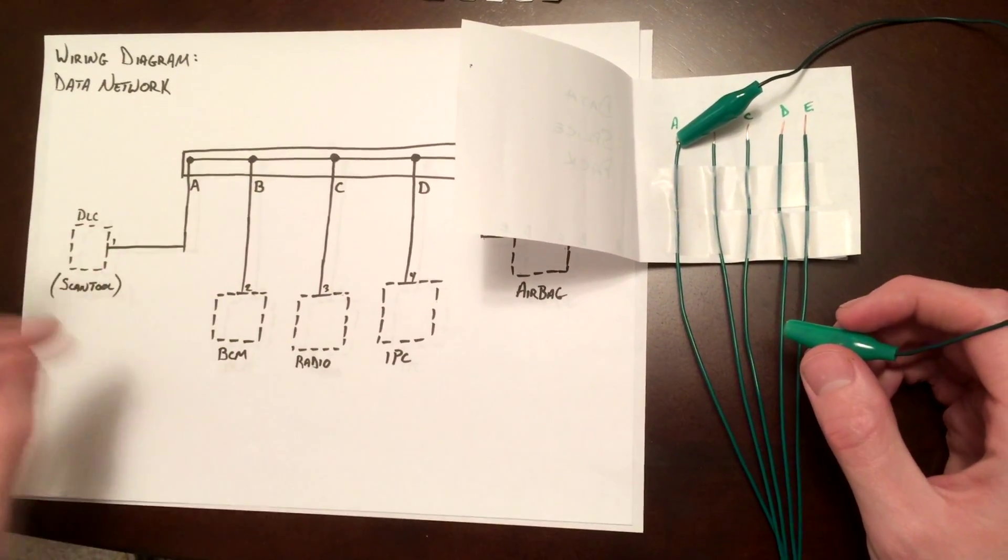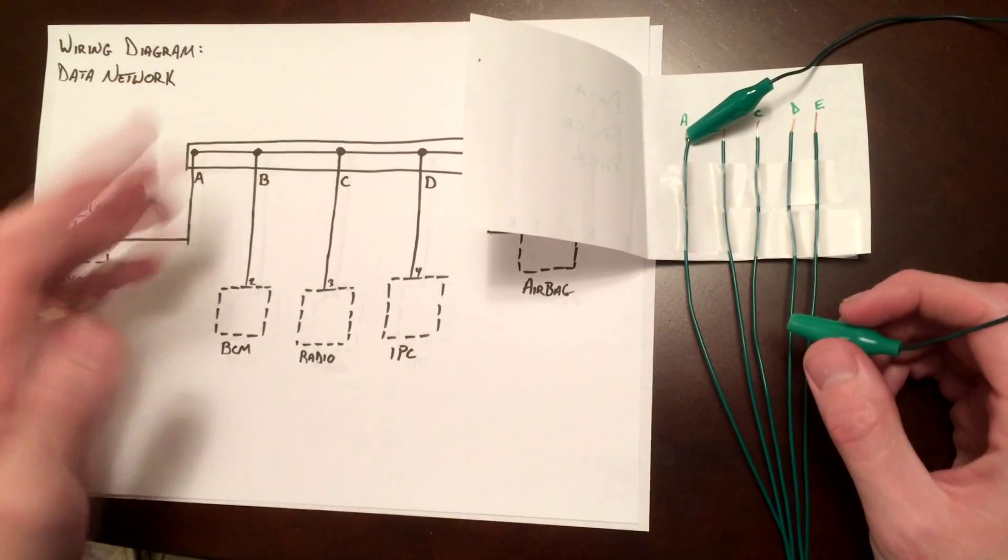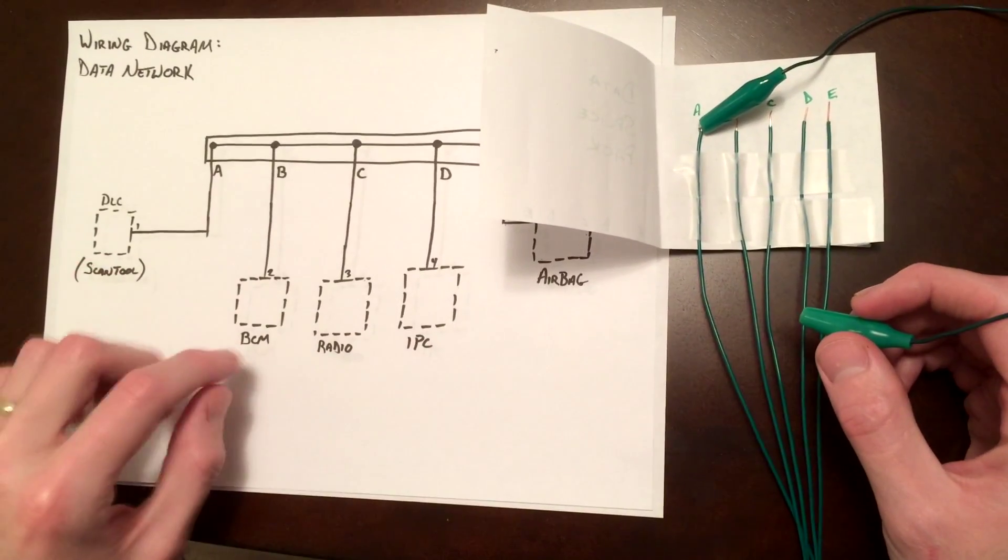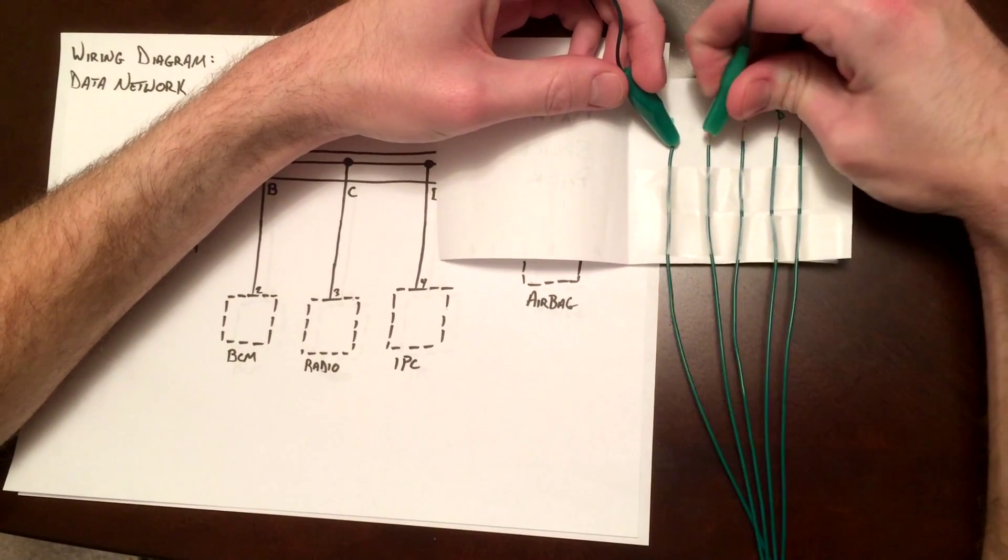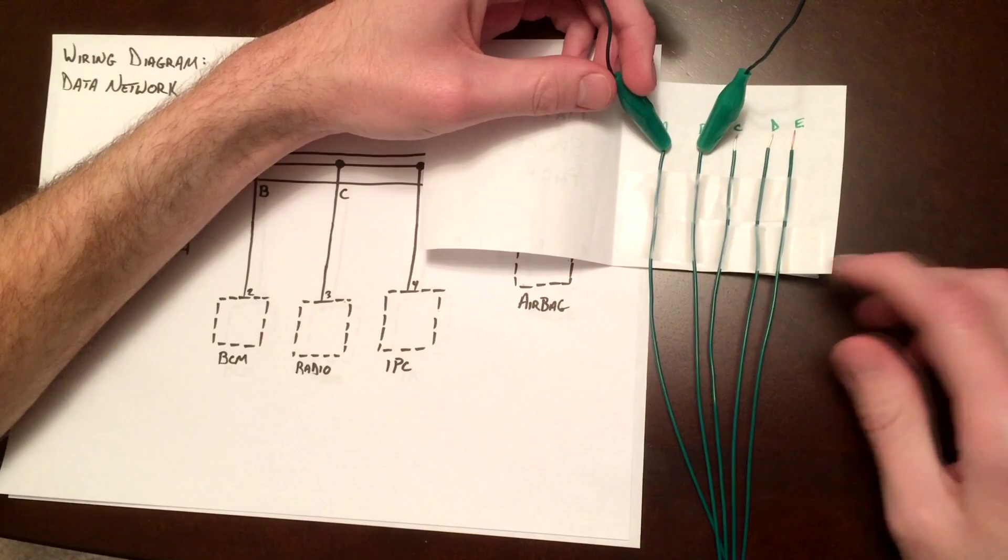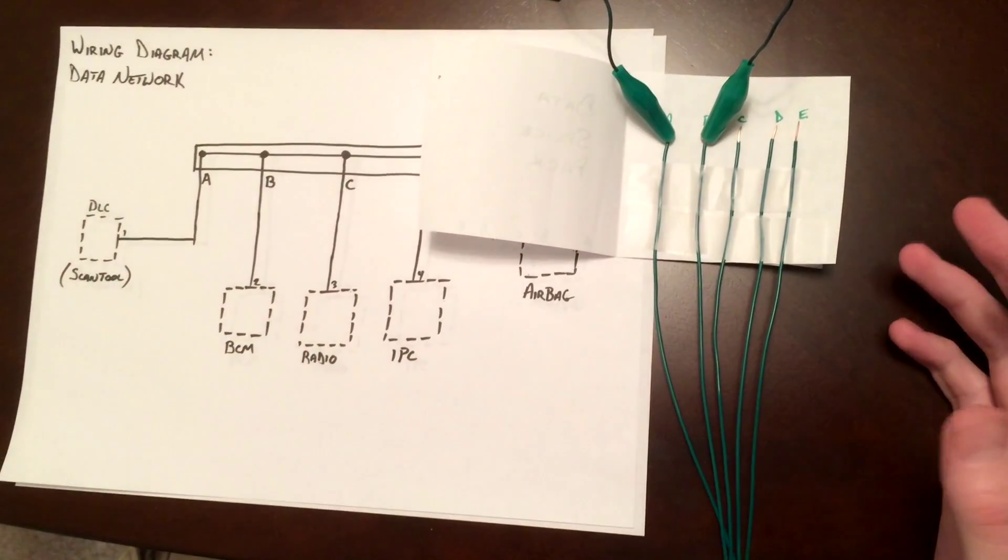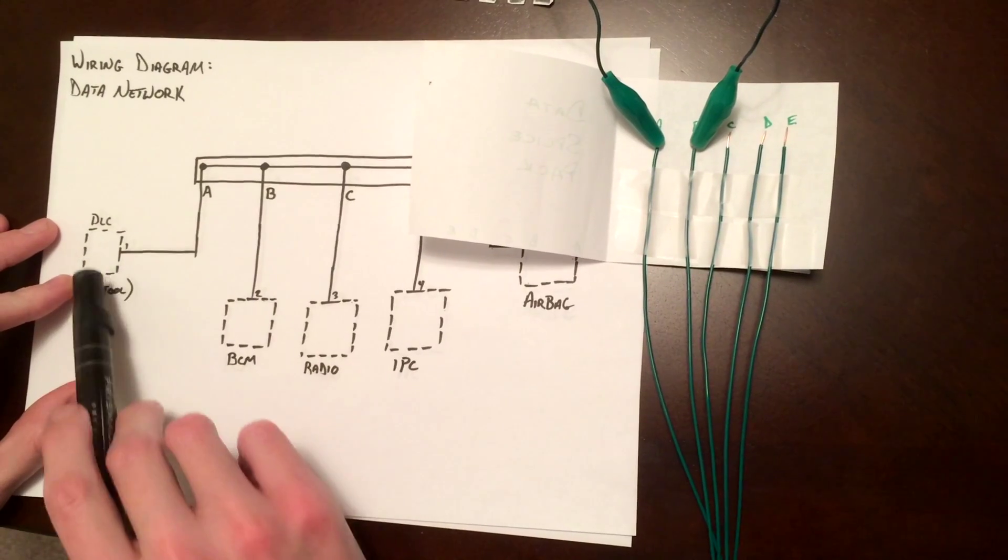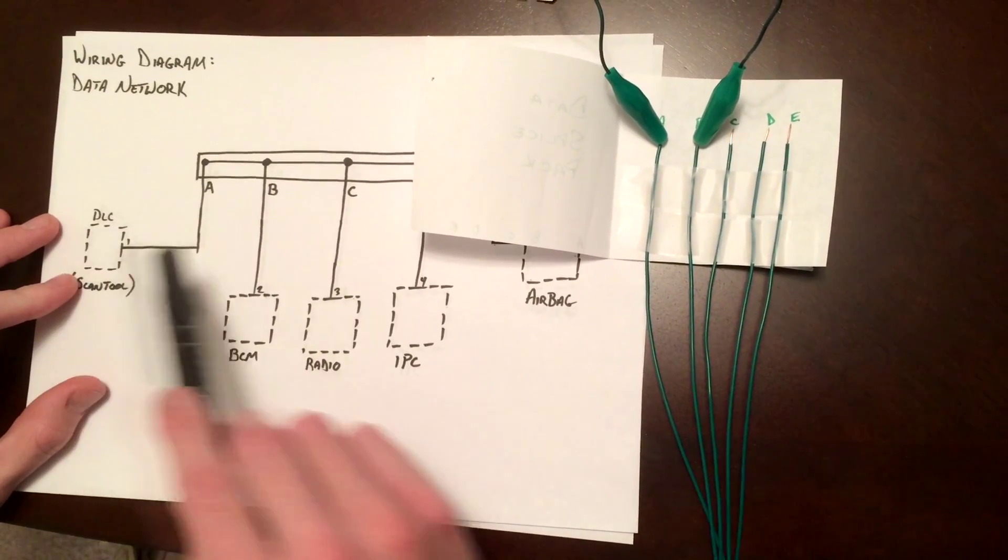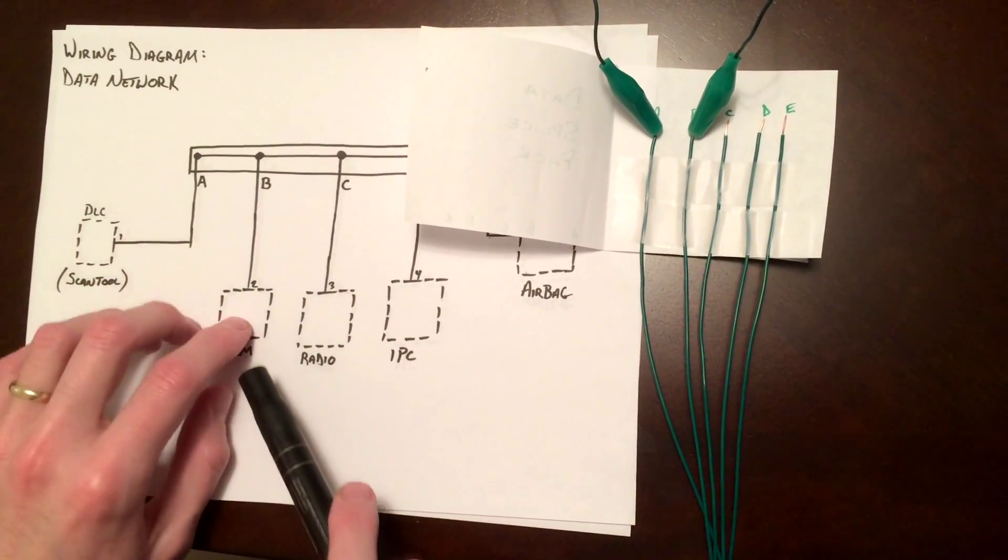So, with your scan tool open, you start off with the first one. In this example, it's the body control module. So we're going to go from pin A to pin B, and we're going to see if we can communicate. If you have communication, that means that all your wires from your DLC to the body control module are good.